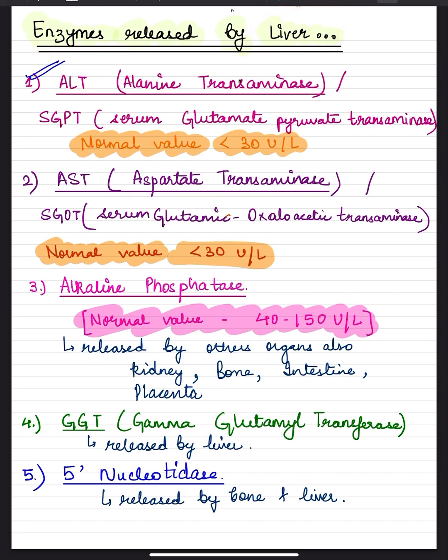First one is the ALT which is alanine transaminase, formerly known as serum glutamate pyruvate transaminase. Normal value is less than 30 units per liter. This one is liver specific.